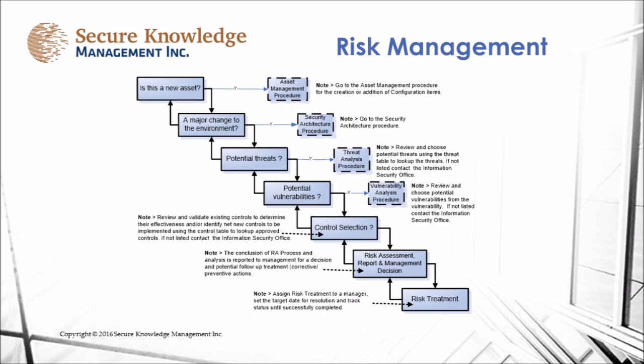In step 3 we look at the potential threats. Step 4 we look at potential vulnerabilities. Step 5 we evaluate the control selection and determine whether controls exist or not — if they do exist already then we may make recommendations on those. In step 6 we finalize the report and present it to management for next steps. In step 7 we create a risk treatment plan to follow up on.